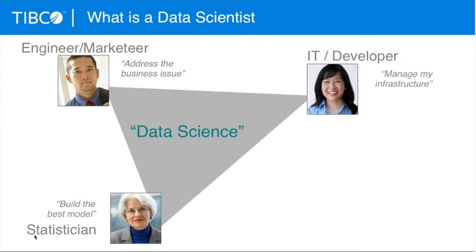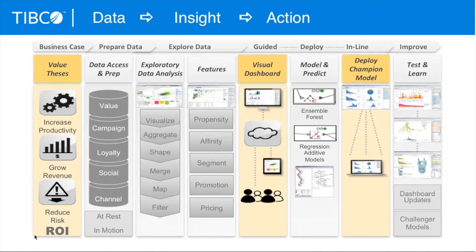So it's a combination of those three legs of the stool that create data science. And sometimes in organizations, you don't get all three things in one person, and you create teams of people that can work together to perform the data science process. That's the combination of skills involved in data science.